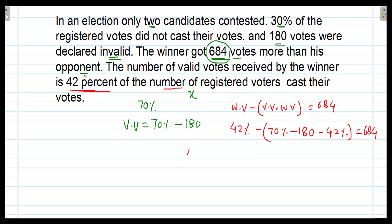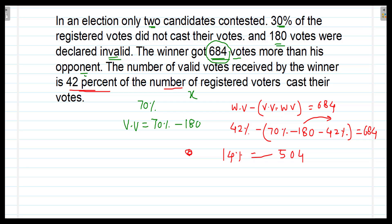This can be solved further. Opening the bracket, there is a negative sign outside, so all signs change. This gives 42% plus 42% minus 70%, which is 84% minus 70% equals 14%. The minus and minus become plus, but shifting to the other side makes it minus again. So 14% of x equals 684 minus 180, which equals 504.